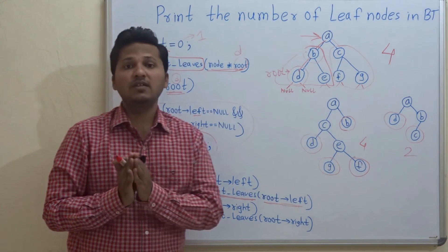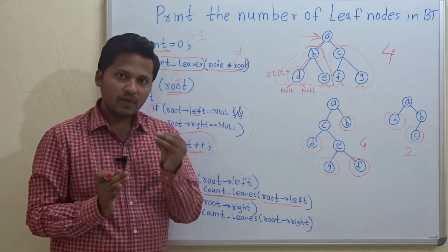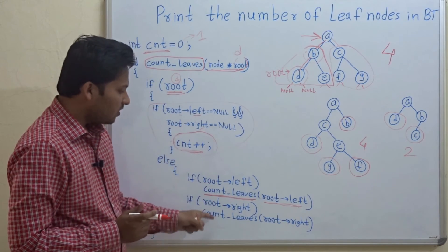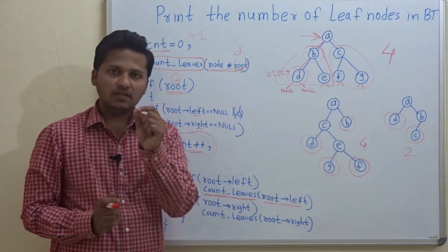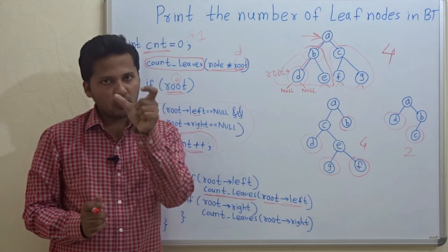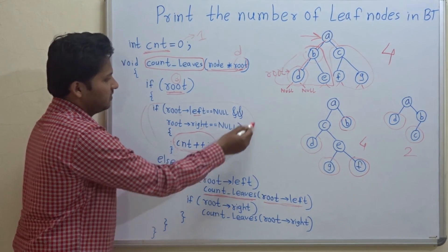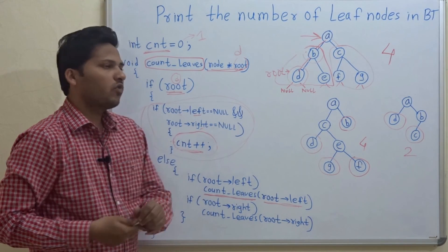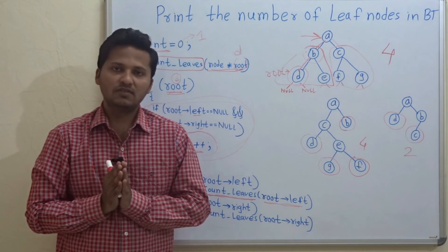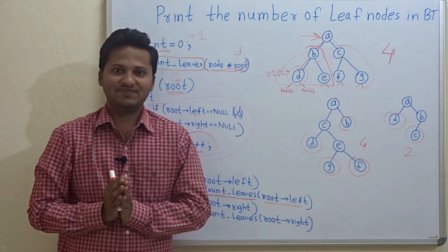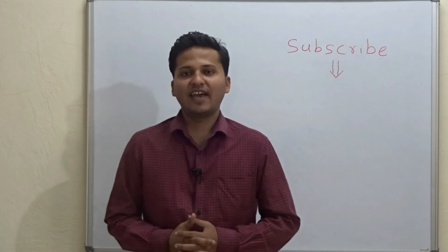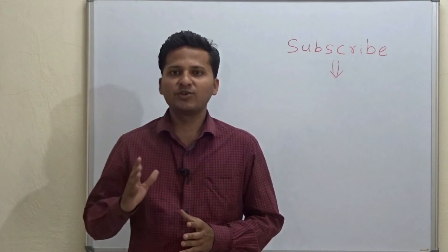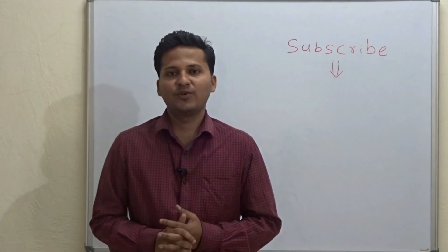If you have seen my inorder traversal program on my channel, then you can understand this perfectly. This is essentially the inorder traversal of a tree, and inside that inorder traversal program I have just added the condition of checking the left and right side of a node. So this is the program for counting the number of leaves in a binary tree. Thank you. Please subscribe to my channel as I post algorithm videos every day, and if you want a video on any particular topic, please mention it in the comments below. Thank you.